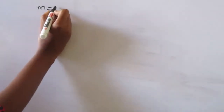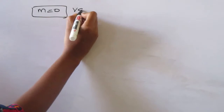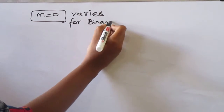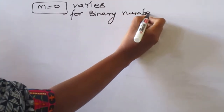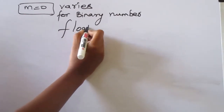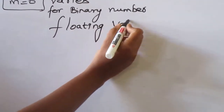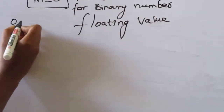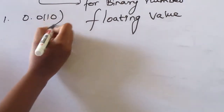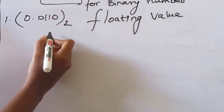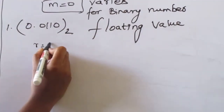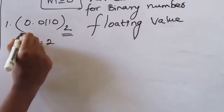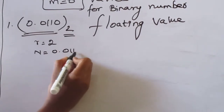Last class I told you about m is equal to 0. This varies for binary number floating value. I will explain with an example: 0.0110 base 2. Here m is equal to 0 varies, r is equal to the base value, which is 2, and n is the number given, that is 0.0110.